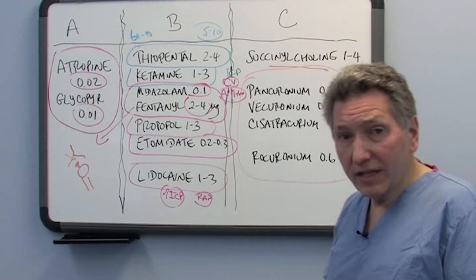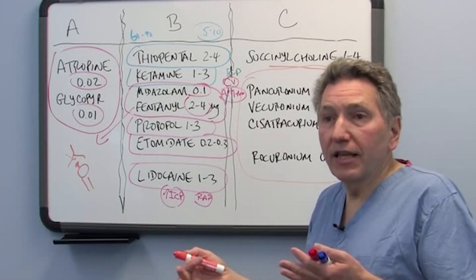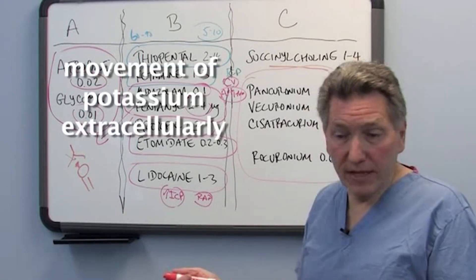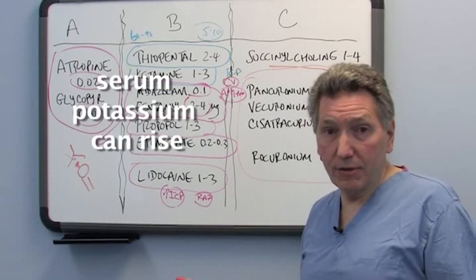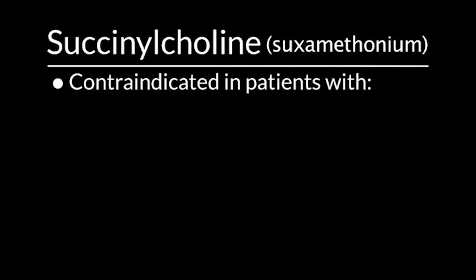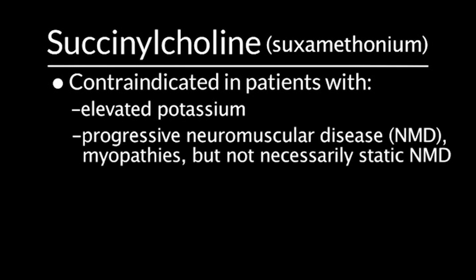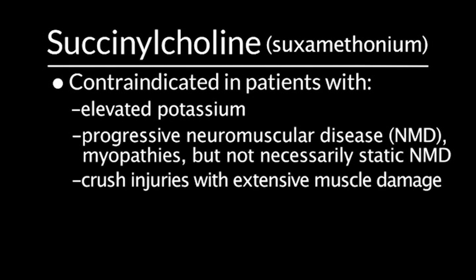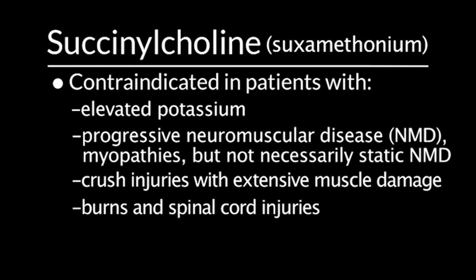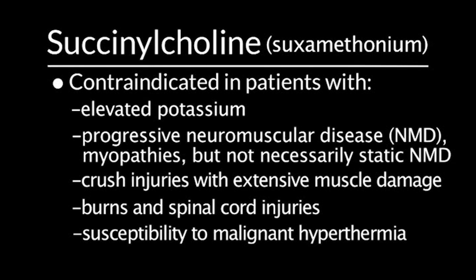Why is that such a big deal? Because if you have depolarization, and you have muscle twitching, then you have a lot of movement of potassium from the intracellular space to the extracellular space, and your serum potassium can go up significantly. So the first contraindication to using succinylcholine is a known high potassium. There are other contraindications to sucks. Progressive neuromuscular disease, myopathies, but not necessarily static neuromuscular disease, are at higher risk of severe hyperkalemia. Similarly, crush injuries with extensive muscle damage can predispose to hyperkalemia with sucks. Burns and spinal cord injuries can do the same, although perhaps not until 8 to 12 hours after the injury. Finally, a known susceptibility to malignant hyperthermia is a definite contraindication to succinylcholine, as it is a known trigger for that disease.